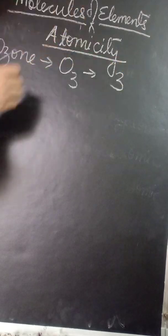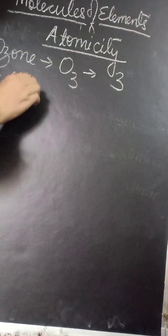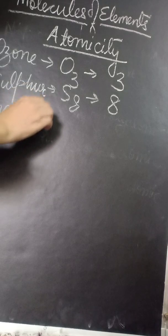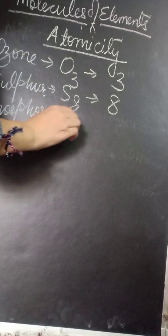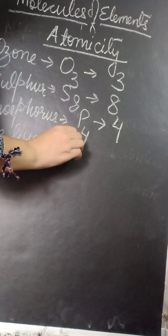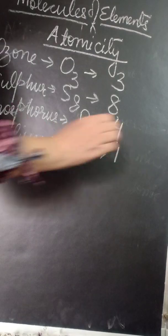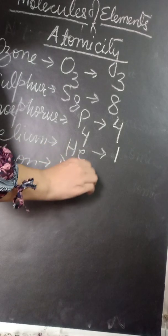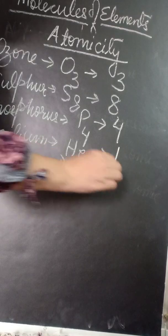For example, ozone atomicity is 3. Then sulfur S8, atomicity is 8. We can write phosphorus, P4, so the atomicity is 4. We can take helium, a noble gas. We write it as Ne only, no numbers here, so atomicity is 1.